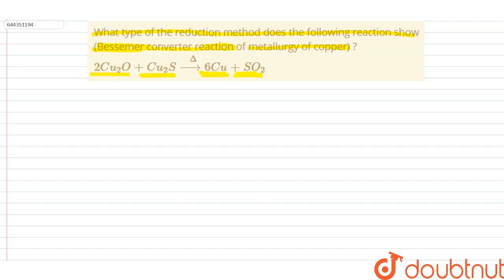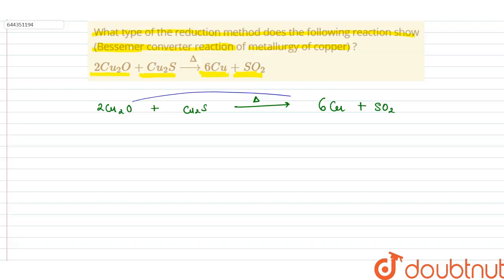So let us understand what is happening here. Let us rewrite the reaction: 2Cu₂O plus Cu₂S is being heated, and 6Cu plus SO₂ is being formed. There was an oxide of copper and a sulphide of copper, and we are getting pure copper. Both the oxide and the sulphide are being reduced, so this is known as auto-reduction.